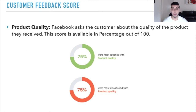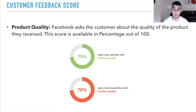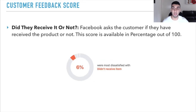There are 4 things Facebook assesses: product quality, whether customers received their item, customer service, and shipping time. For product quality, Facebook asks the customer about the quality of the product they received — scored as a percentage out of 100. For example, 75% were satisfied or dissatisfied with quality. Facebook also asks customers if they received the product, again as a percentage. For example, 6% were most dissatisfied with not receiving their item.